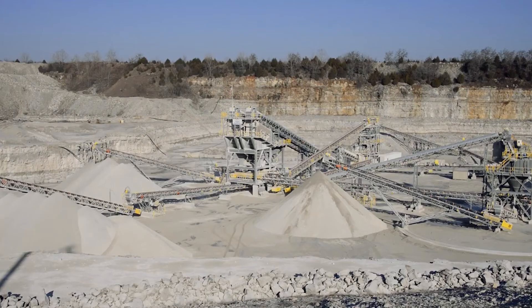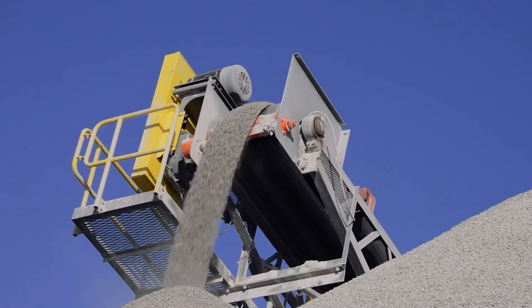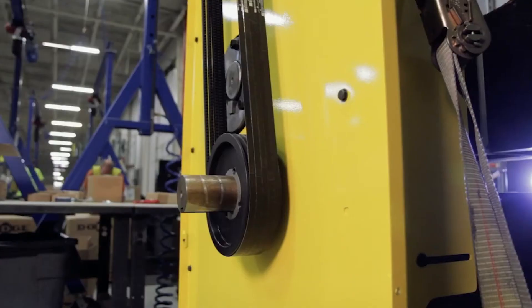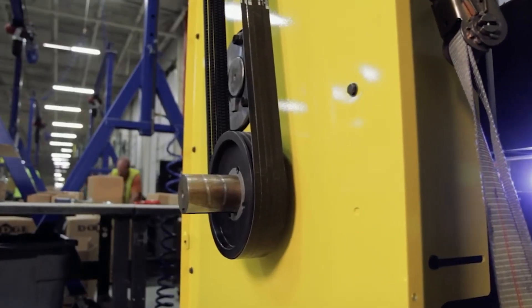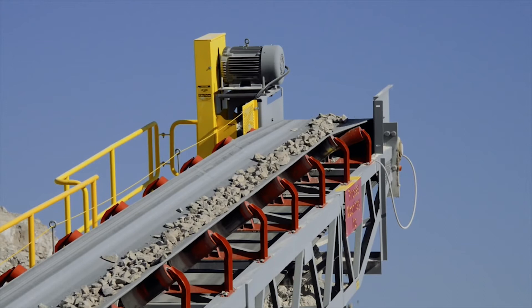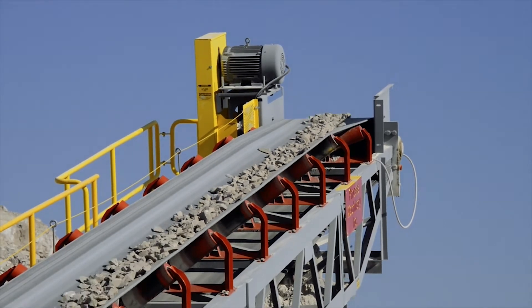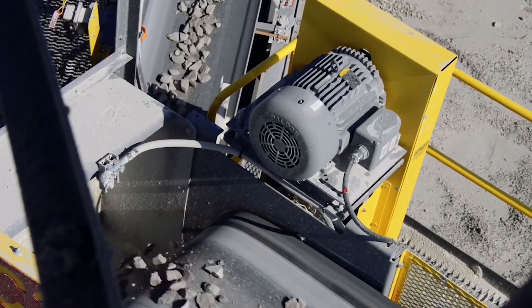Proper belt tension is critical to successful operation. Insufficient tension causes slippage, resulting in premature wear on belts and shivs or sprockets. Over-tensioning can result in damage to the shaft or bearings and the connected equipment.